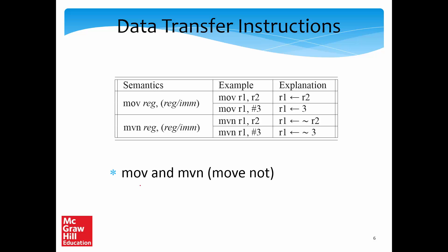We will be using a slightly different kind of semantics in this chapter. Every single instruction will be explained with the help of a table. The first column will look at the semantics, showing the different modes of the instruction. Then we'll give an example and explain it in register transfer notation. The simplest instruction in the ARM ISA is the MOVE instruction.